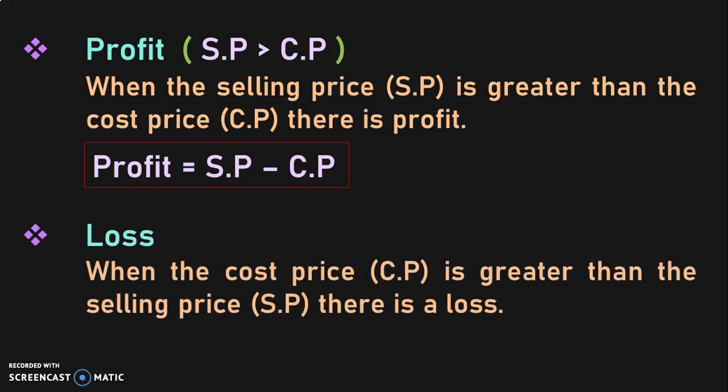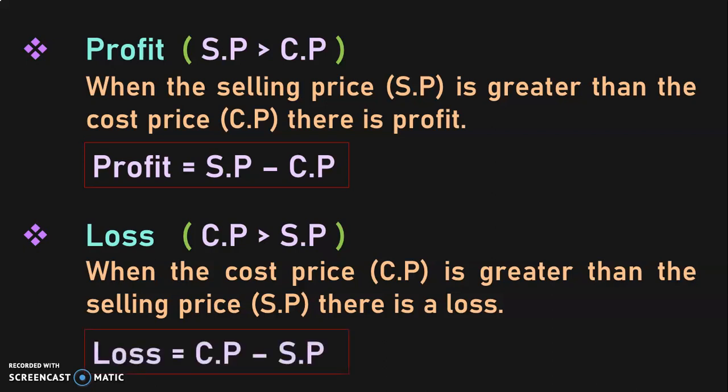Loss: when the cost price is greater than the selling price, there is a loss in the transaction. The condition for loss is cost price greater than selling price, then the transaction is at loss. The formula to find out loss is cost price minus selling price. Remember these two formulas very well, because the remaining formulas we will be learning in this session will be based on these two formulas.